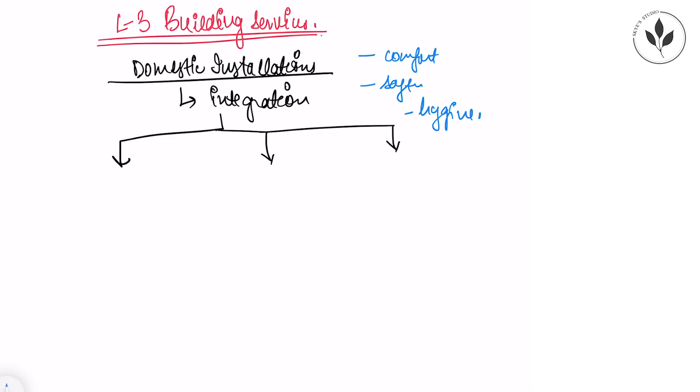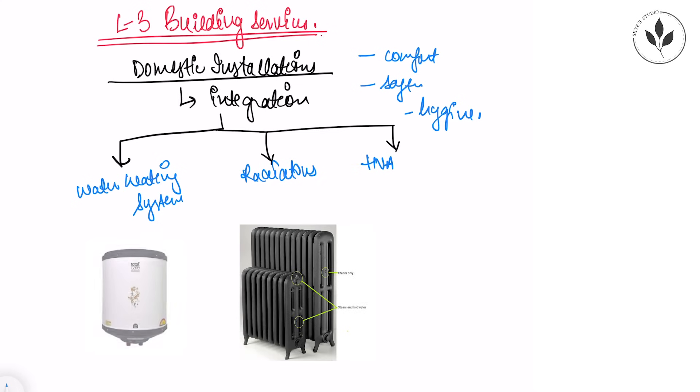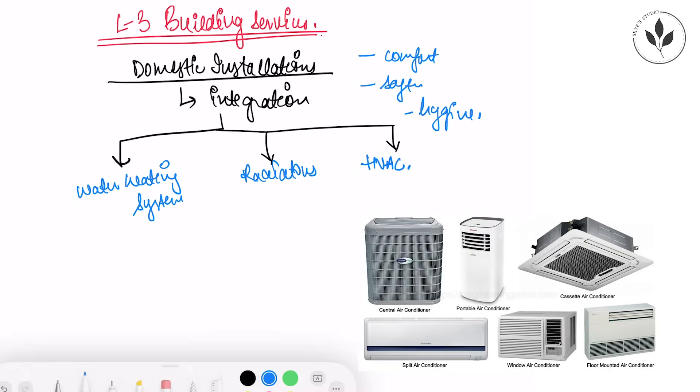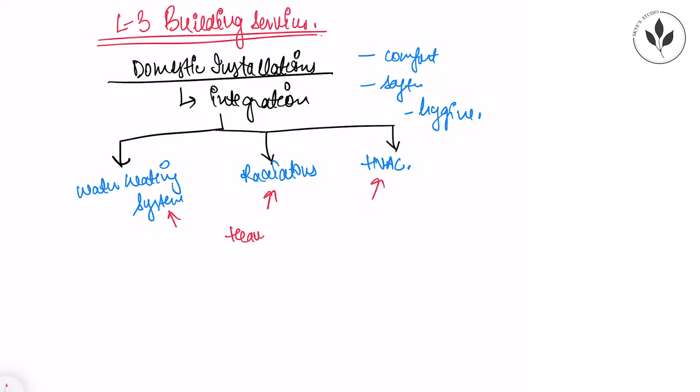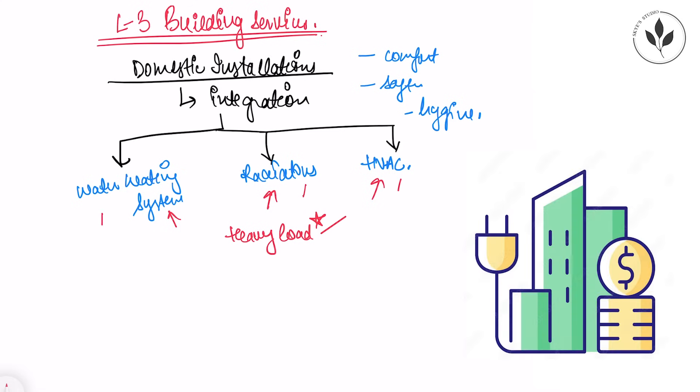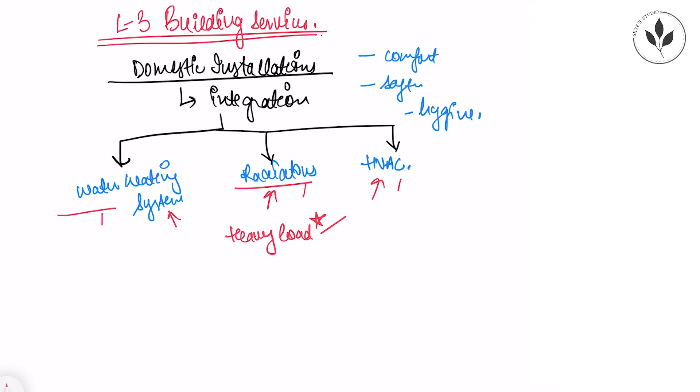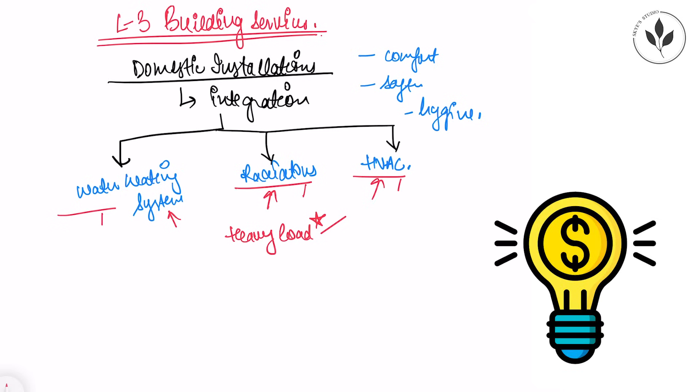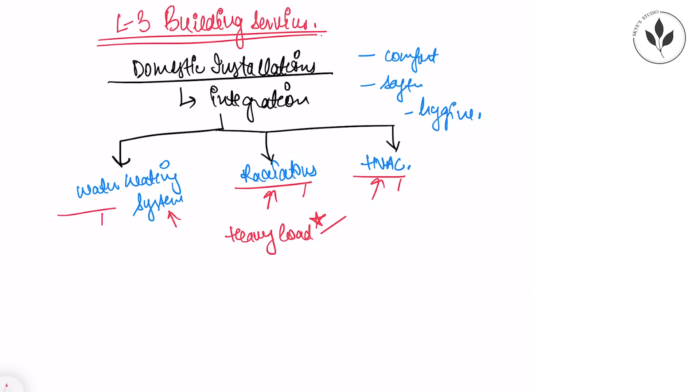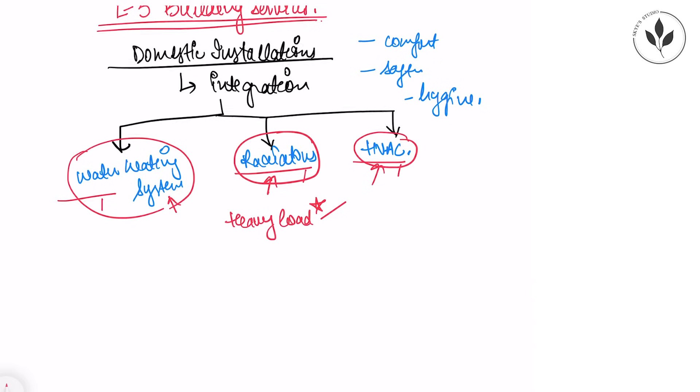It's important to put them in system for ensuring comfort, safety, and hygiene. We're going to study water heating systems, radiators, and HVACs. All three carry very heavy loads inside your building - by heavy load we mean they need more voltage. The maximum voltage taken up in our house is by these three domestic installations, and the electricity bill hugely depends on them. If we use more AC, the bill will be higher compared to other installations.